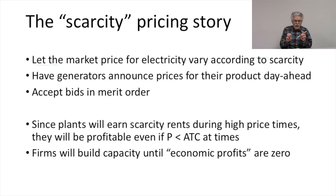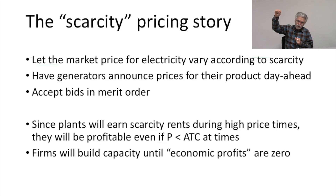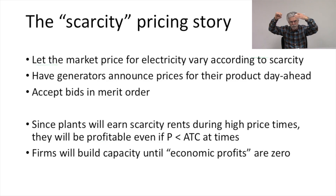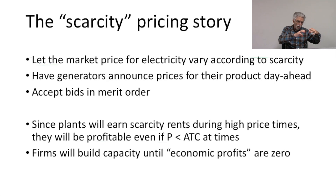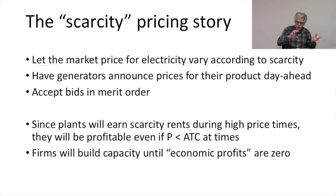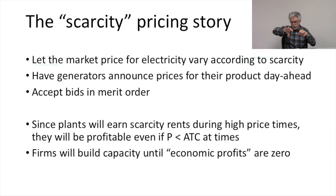If we do that, the price of electricity in any given period is going to match the most expensive resource that we needed to bring online to meet the demand during that period. The plants that are already online as the price rises are going to be earning scarcity rents that help them make a normal profit, even though there are times when they're not running and times when they're running below their average total cost. As the price rises and we bring more expensive resources online, the existing resources that we're already running are making additional money.